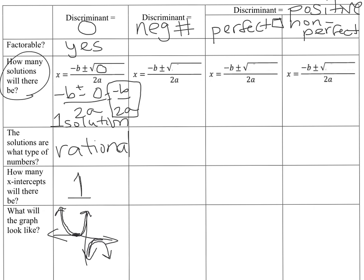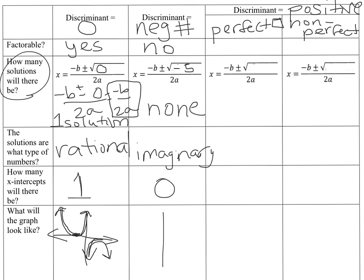If the discriminant is a negative number, is it going to be factorable? No, absolutely not, because negative numbers are not perfect squares — even negative 36 or negative 49 are not perfect squares because they're negative. If we have a negative discriminant, say negative 5, there are no solutions, because you can't find the square root of a negative number. The solution type is imaginary — not a real number — and there are zero x-intercepts.